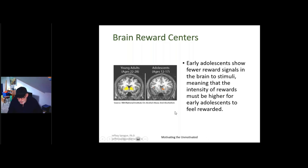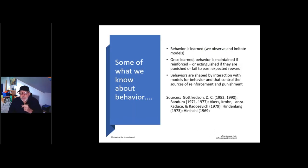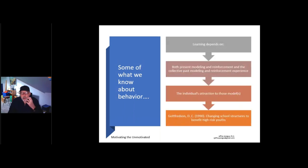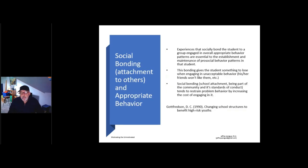Behavior is learned, and behaviors that work for a student will be maintained, and behaviors that don't work will disappear. That makes us uncomfortable sometimes. Learning depends on modeling and reinforcement, so our students need to be really surrounded by positive role models and people that they're attracted to — not physically or sexually attracted, but that they care for them. So again, your motivation is going to be more valuable if you are a person that the student likes. Social bonding — some people call it the emotional bank account — your child or student should have something to lose when engaging in unacceptable behavior. Your approval and recognition is a factor there.